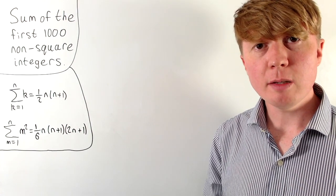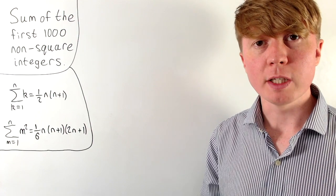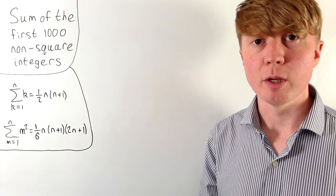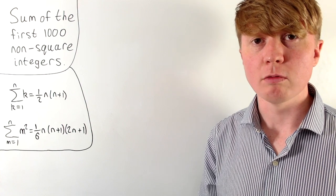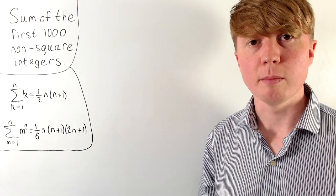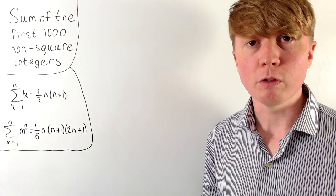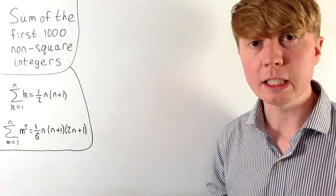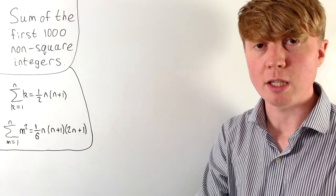The idea behind our approach is to take the sum of all of the integers, including the square numbers, then subtract all of the square numbers that we didn't really need to include. To help us along the way, we've got two formulas which I'll quote here — I'll include a link in the description for proofs if you're interested.